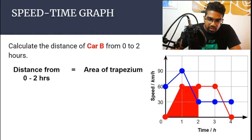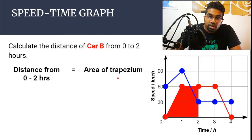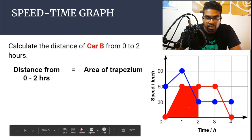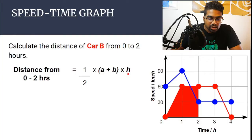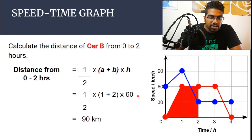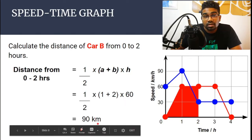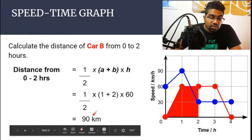This will be the area of the trapezium, because this is from 0 to 2 hours. The formula for the area of a trapezium is half multiplied by the sum of the parallel sides, multiplied by the height: half times (A plus B) times H. Putting in the values, this is 1 unit, this is 2 units: half times (1 plus 2) times 60. The answer we get is 90 kilometers, because speed is in kilometers per hour and time is in hours — kilometers per hour times hour gives us kilometers.